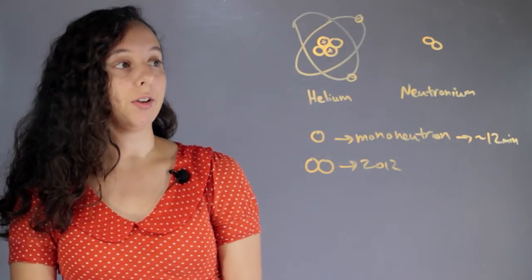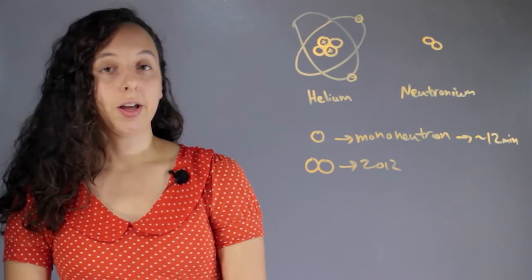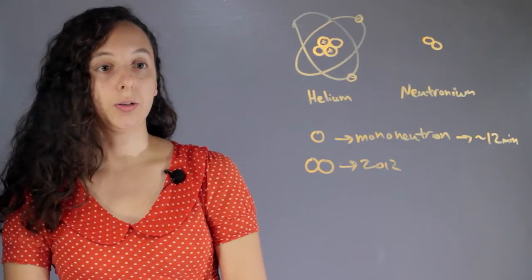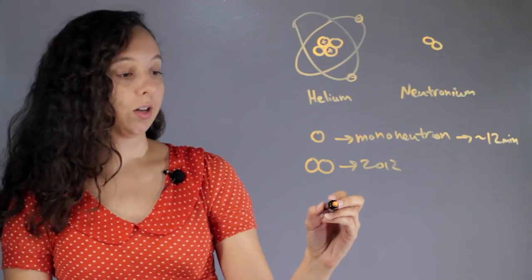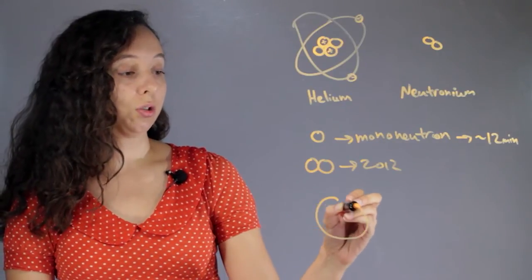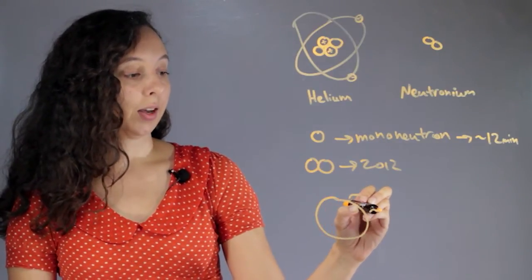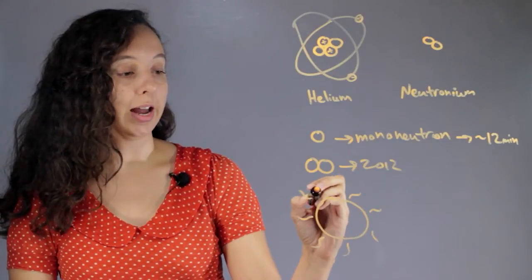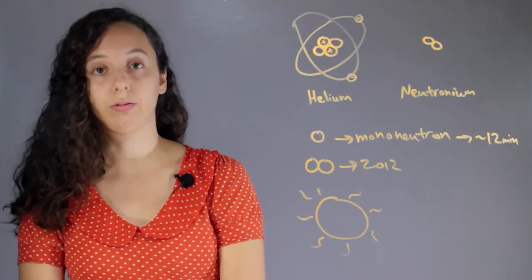Scientists have figured out that the only time that a lot of neutrons packed together could exist would be in the final seconds of a huge dying star. During these final seconds, the pressure would be so intense that it could force a bunch of neutrons together.